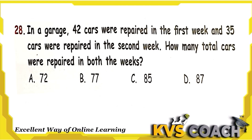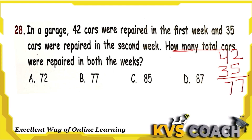The next question: in a garage, 42 cars were repaired in the first week and 35 cars were repaired in the second week. How many total cars were repaired in both weeks? Total means we add: 42 plus 35. 2 plus 5 is 7, and 4 plus 3 is 7. So 77 cars were repaired in total. Option B is the right answer.